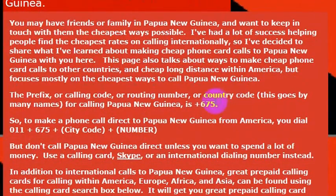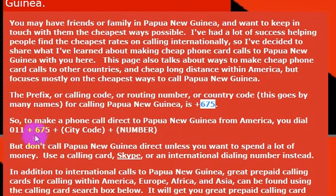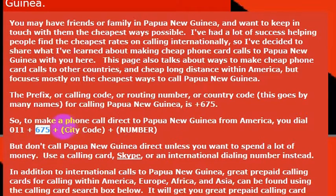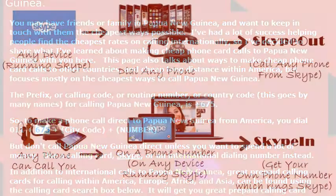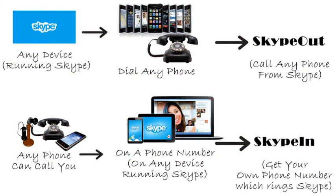When I'm ready to go, I may need to make a call to the country around my travel arrangements. To call Papua New Guinea, I just need to know the country code, which is 675. To call Papua New Guinea directly from the United States, I would dial 011, then 675 — which is the country code — and then I would dial the phone number that I want to reach. So again, the country code for Papua New Guinea is 675.